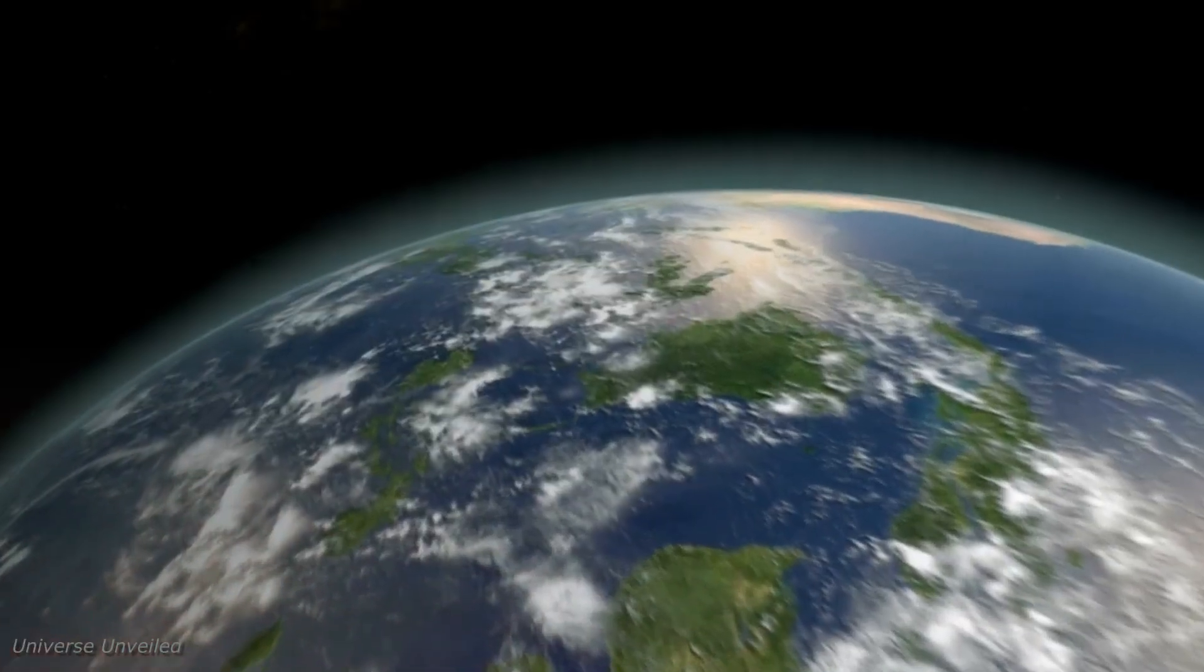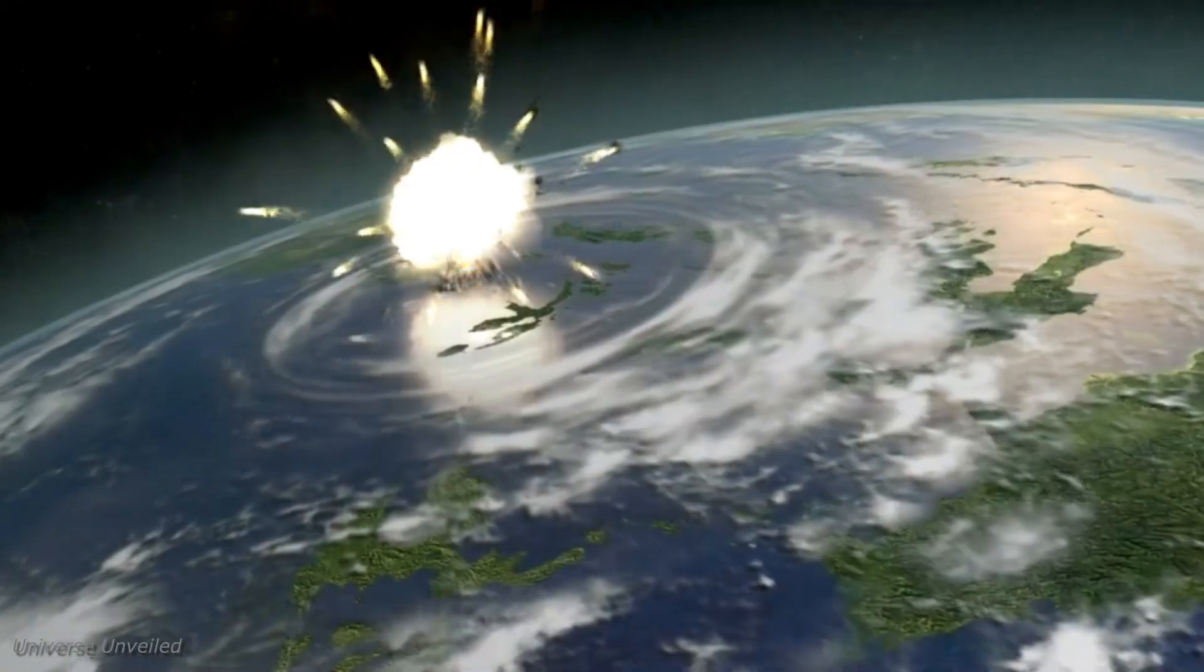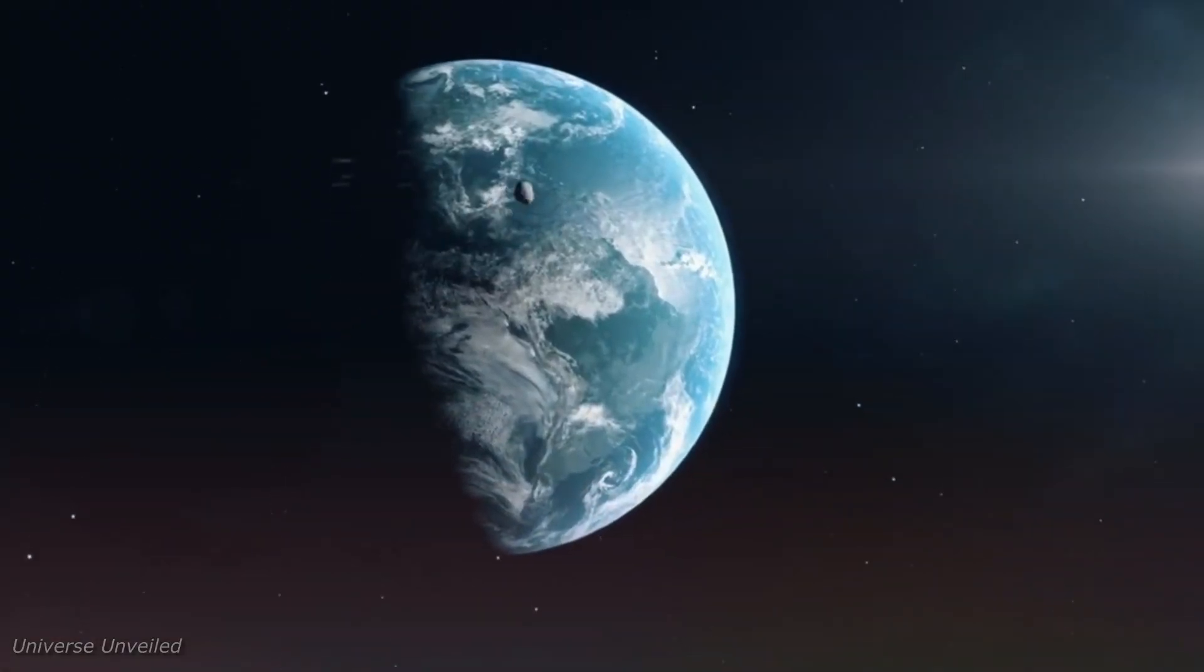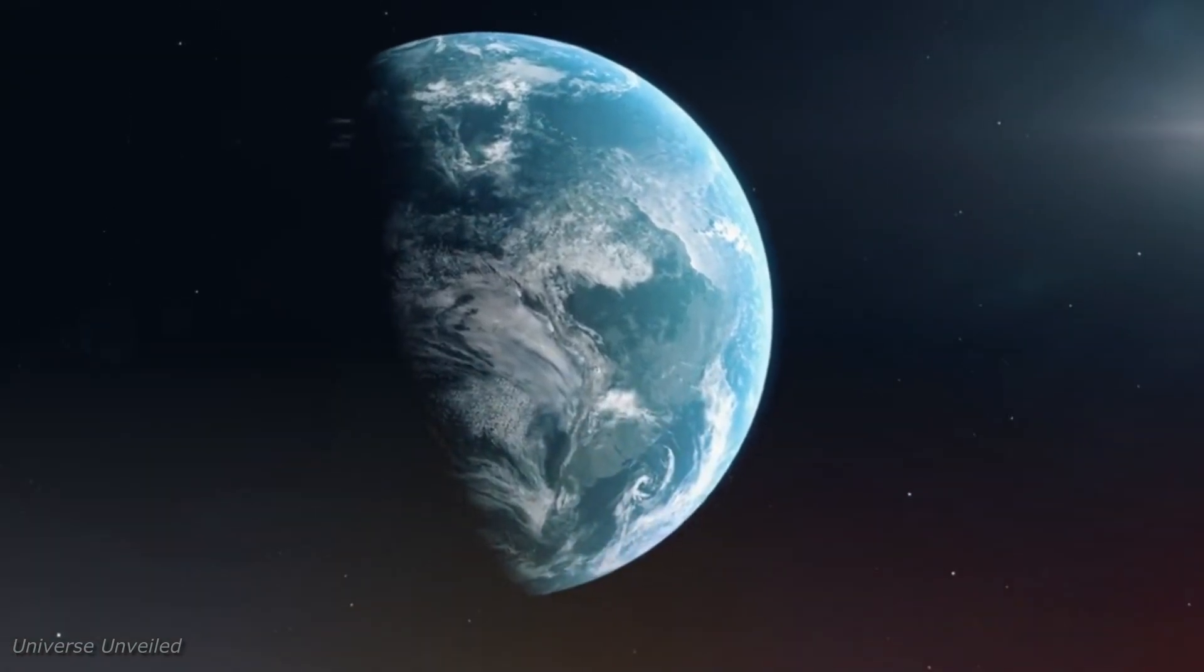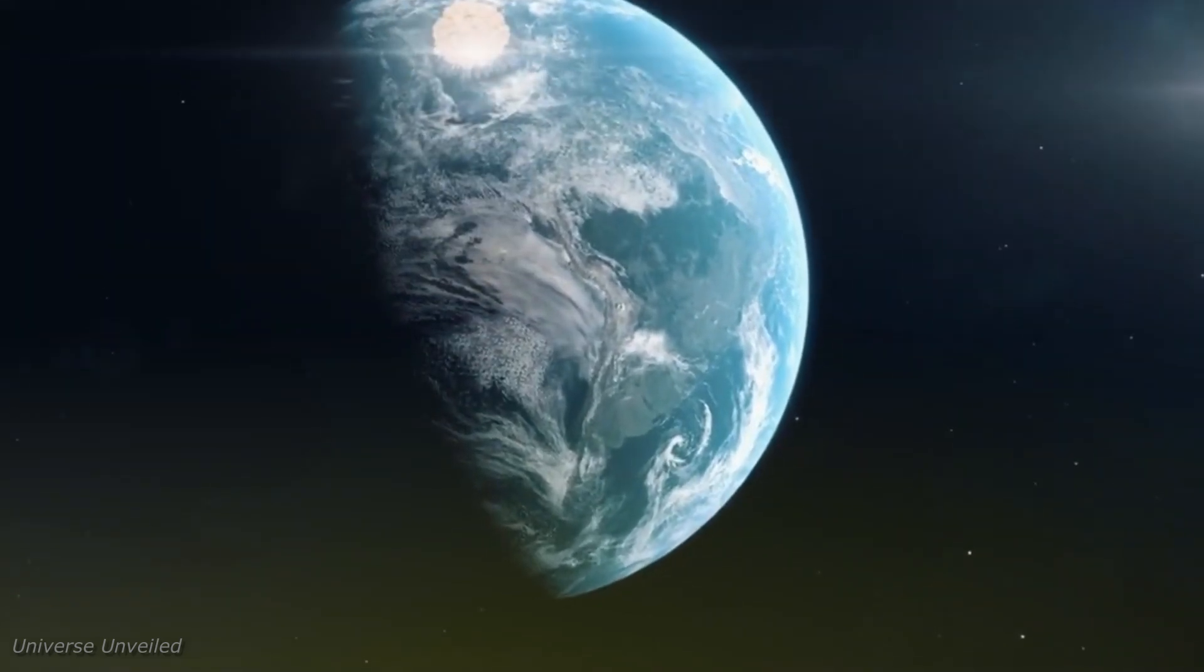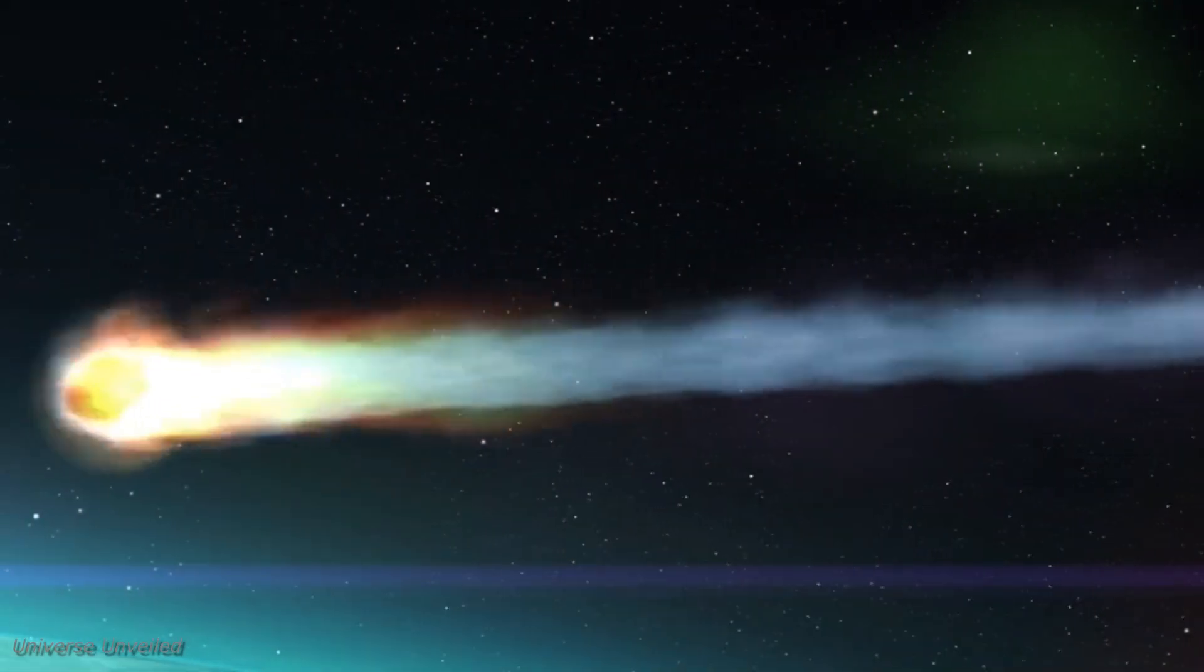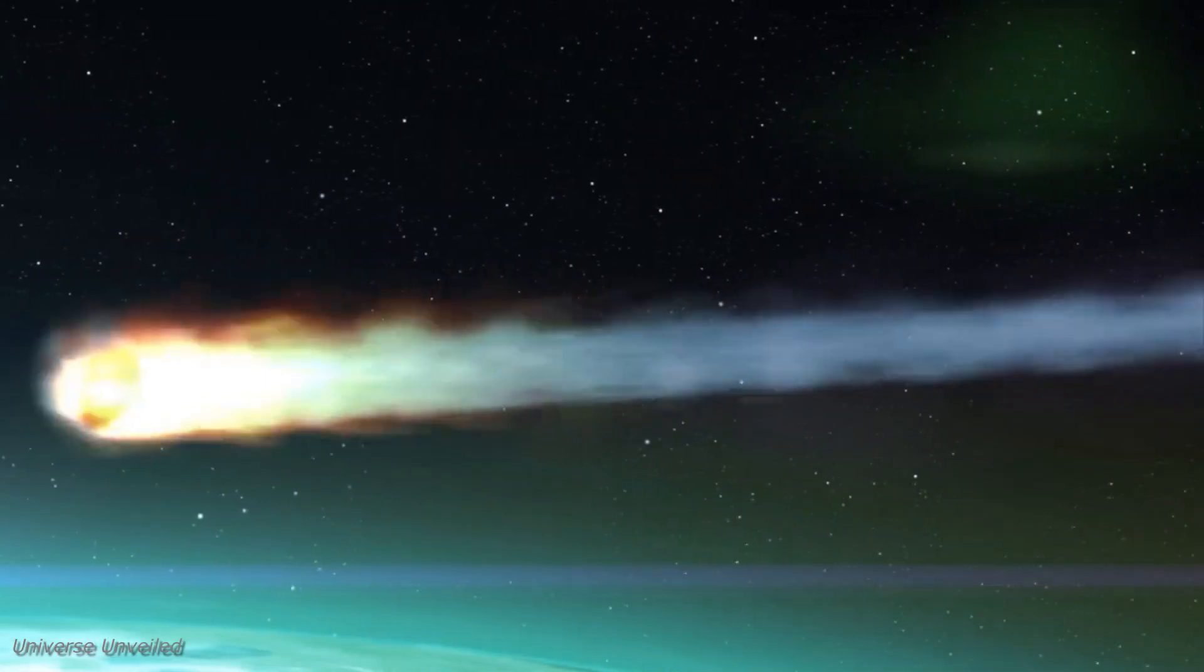Let's talk about the first close flyby in 2029. On April 13th of that year, Apophis is set to pass within just 19,000 miles of Earth's surface. That's inside the orbits of geosynchronous satellites, making it a once-in-a-thousand-years event for an asteroid of this size. This close encounter could potentially influence the asteroid's trajectory, subtly shifting its orbit.